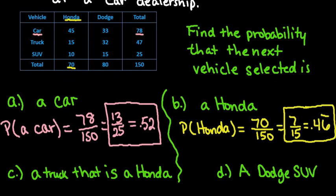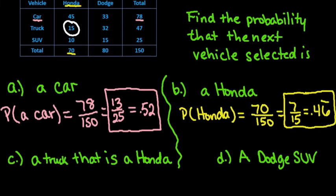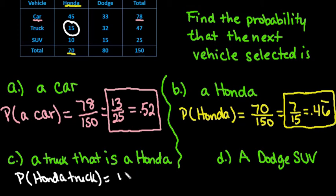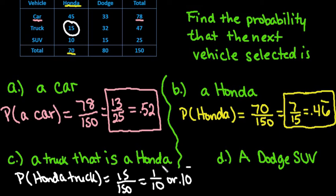The next one is more specific: we're looking for a truck that is a Honda. Since we need both conditions, this is a relative frequency inside the table. There are 15 total vehicles that are Honda trucks out of 150 vehicles. So the probability is 15 out of 150, which reduces to 1 over 10, or 0.10.